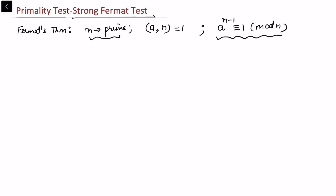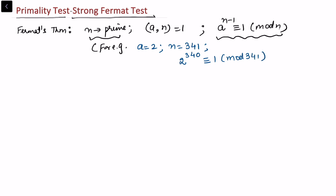However, it is not necessary that if some integer satisfies this condition then n is prime. For example, we can take a equal to 2 and n equal to 341. We notice that 2 to the power 340 is congruent to 1 mod 341, which satisfies the congruence, but this does not imply that 341 is prime. In fact, we call such integers pseudo-primes.